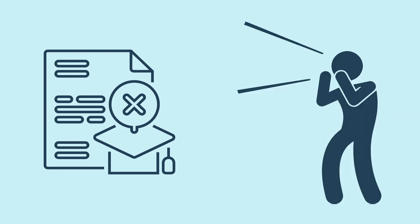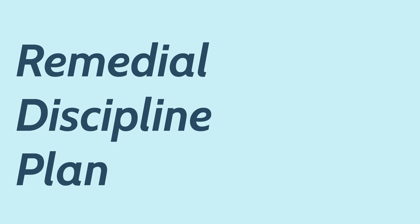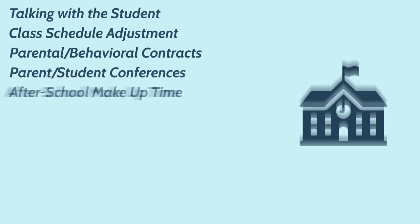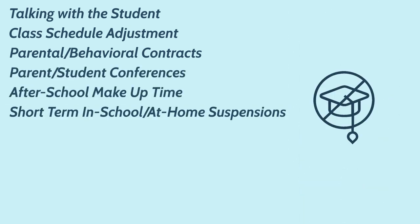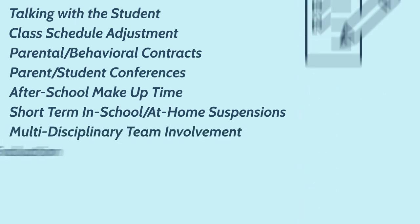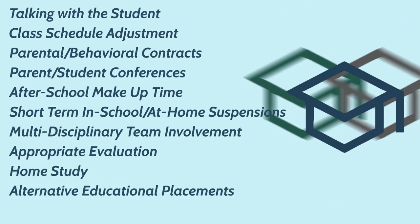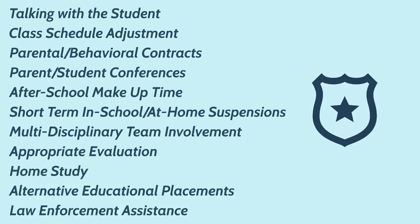Prior to suspension or expulsion of a student for repeated acts of disruptive behavior, good faith efforts shall be made to implement a remedial discipline plan. Examples of this are talking with the student, class schedule adjustment, parental or behavioral contracts, parent or student conferences, after-school makeup time, short-term in-school or at-home suspensions, multidisciplinary team involvement, appropriate evaluation, home study, alternative educational placements, and law enforcement assistance as appropriate.